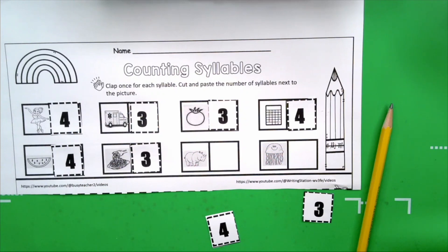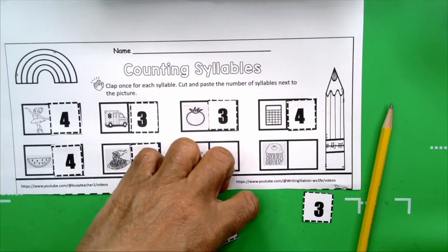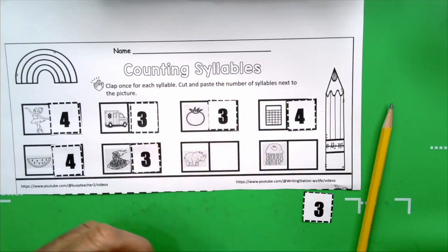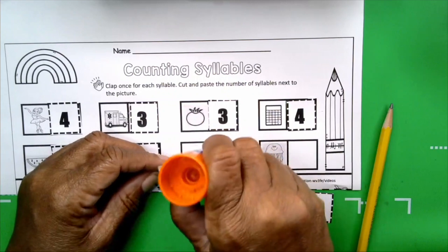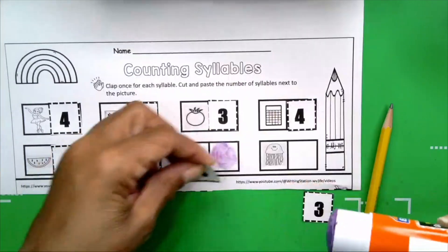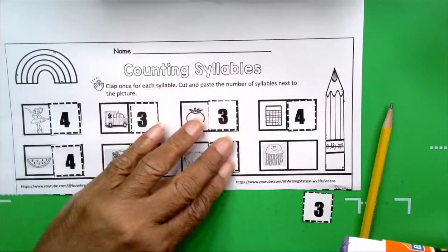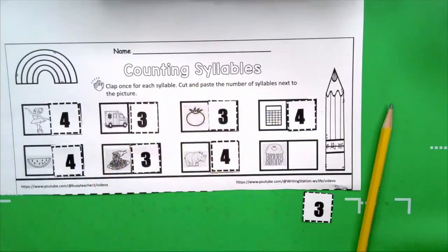How many claps? Four. You're right. I hear you yelling. Four. Rhinoceros has four syllables. Four syllables. Four claps. Four syllables. Take our number four. Paste it next to the rhinoceros.